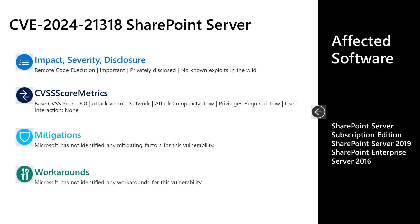And finally, CVE-2024-21318. This is an important remote code execution vulnerability in SharePoint Server, privately disclosed with no known exploits out in the wild. It has a base score of 8.8. The attack vector is over the network, the attack complexity is low, low privileges are required, but no user interaction is required. There are no documented mitigations or workarounds. A threat actor could exploit this as an authenticated attacker with site owner permissions or above, allowing them to execute code remotely on the SharePoint server. Affected software is SharePoint Server Subscription Edition, SharePoint Server 2019, and SharePoint Enterprise Server 2016.